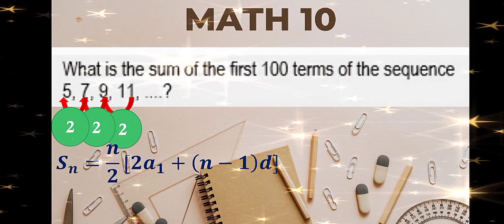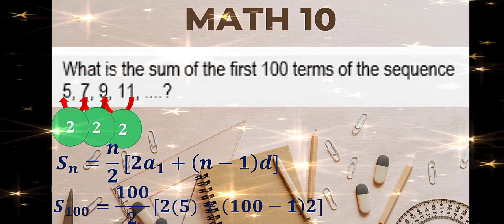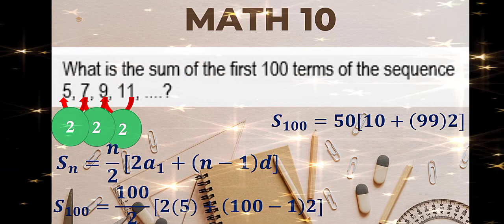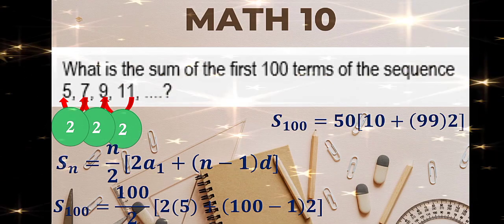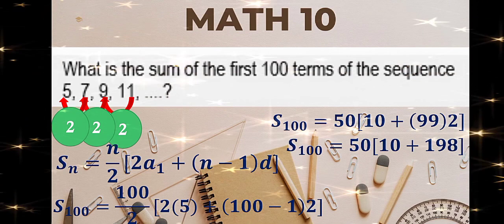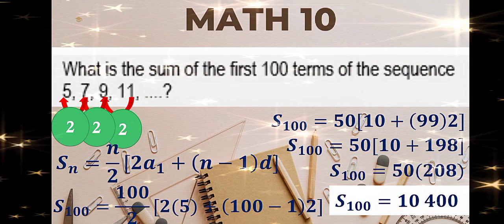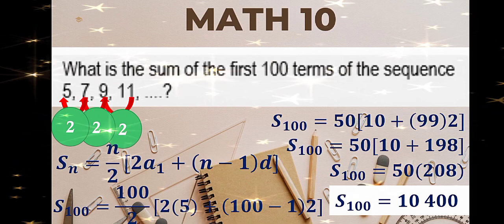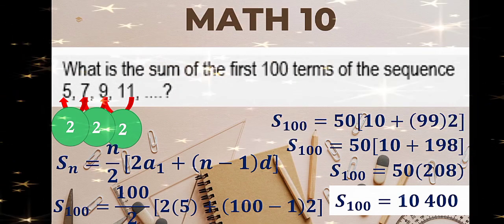Substitute: our n is 100, our first term is 5, and our common difference is 2. Then simplify: 100 divided by 2 is 50. 100 minus 1 is 99, multiplied by 2 is 198. Plus 10, that is 208. Times 50, that is 10,400. Therefore, the sum of the first 100 terms of the sequence is 10,400.